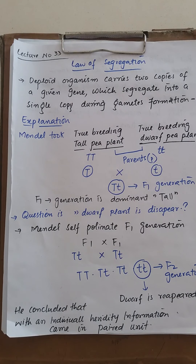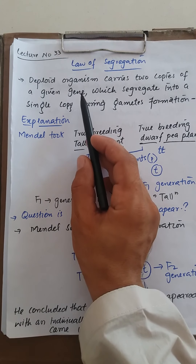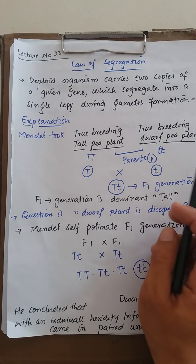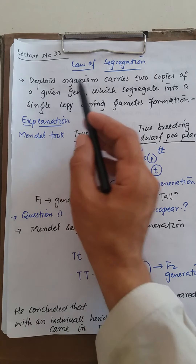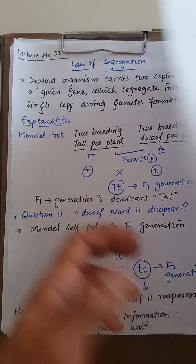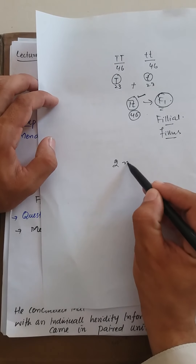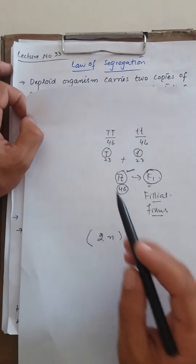So, law of segregation. The statement is that a diploid organism carries two copies of a given gene, which segregate into a single copy during gamete formation. For example, a diploid organism having two copies of a given gene — so here the diploid organism carries two copies of a given gene.